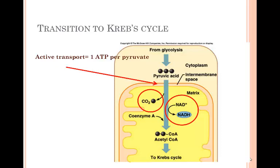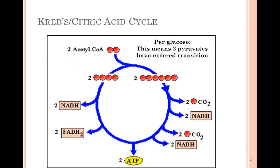All the enzymatic conversions of the citric acid cycle produce 3 more NADH, 1 more ATP, 1 more FADH2, and 2 more carbon dioxides per initial pyruvate. To relate our numbers back to our glucose molecules, we double it all.